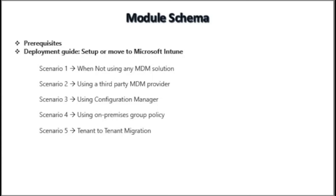The third scenario is when an organization is using Configuration Manager, also known as SCCM, which is an on-premises solution for device management. The fourth scenario is when an organization is using Group Policy Objects to manage devices — this is the traditional way of managing devices, still used by some companies, especially small organizations. The last option could be a tenant-to-tenant migration, where one company is purchasing another and both companies have their own Intune tenant for device management.